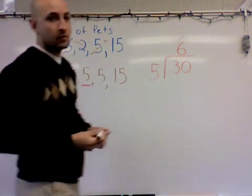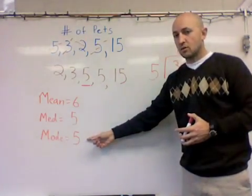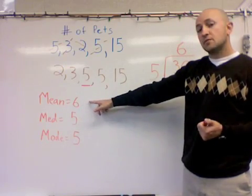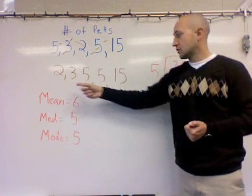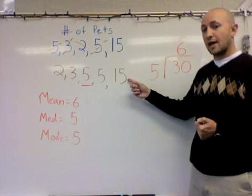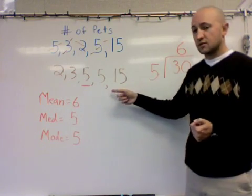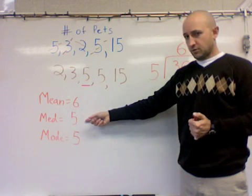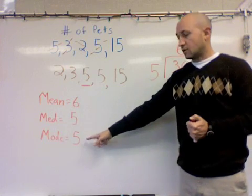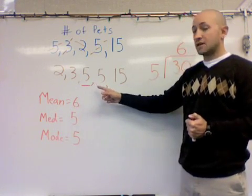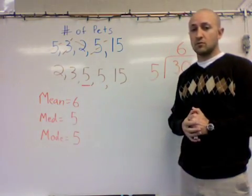Now we have found all three answers: the mean, the median, and the mode. To find the mean, take your data set, put it in order from least to greatest, add the values up, and divide by the amount of values in the set. The median is the number in the middle of the set, and the mode is the number that appears the most — in our case, five, because it appeared twice while all other numbers appeared only once.